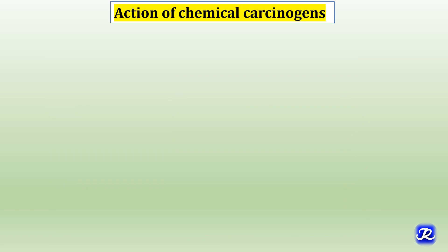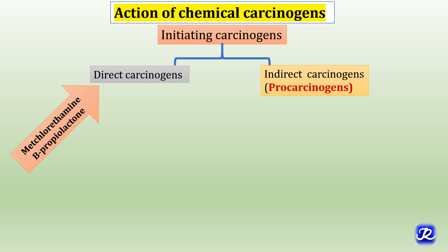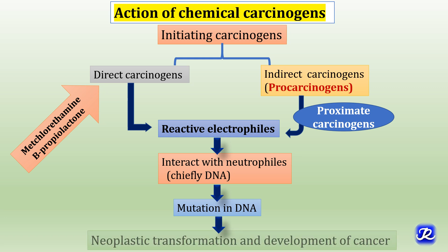Regarding the action of chemical carcinogens, there are two types of initiator carcinogens. The first is direct carcinogens, which are highly reactive and interact easily with target molecules like DNA to produce cancer. They do not undergo any metabolic activation in the body. Examples include mechlorethamine and beta-propiolactone. The second type is indirect carcinogens, also called procarcinogens. These are not reactive and require prior metabolic activation; the intermediates formed are called proximate carcinogens. Both direct and indirect carcinogens are electron-deficient reactive electrophiles that interact with DNA to produce mutations, ultimately resulting in neoplastic transformation and cancer.